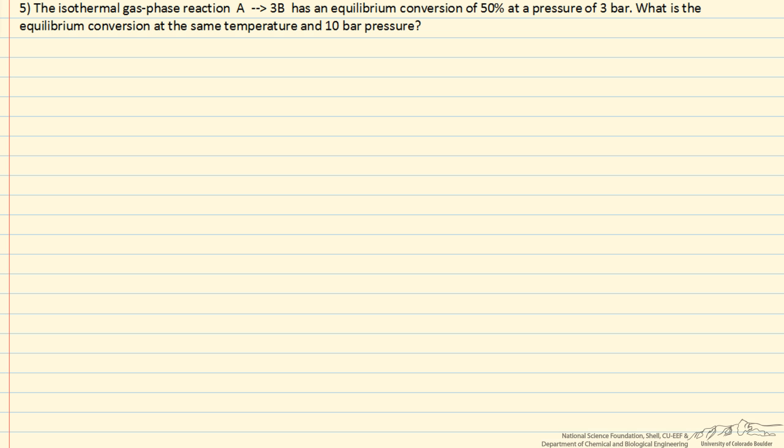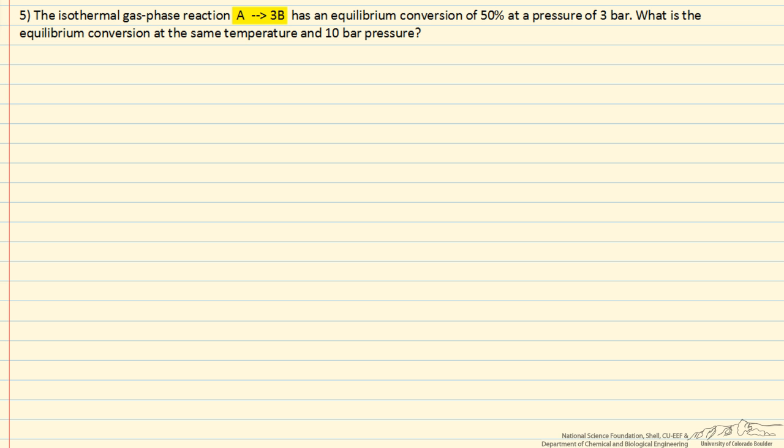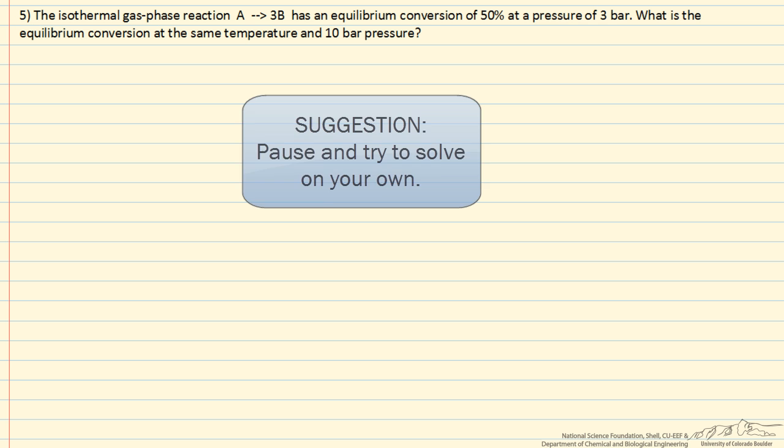This is an example where we have A reacting to 3B in the gas phase, and we're given the equilibrium conversion of 50% at a pressure of 3 bar. The question is, what's the equilibrium conversion at the same temperature, but if we increase the pressure to 10 bar?